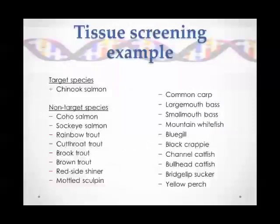We test assay specificity by ensuring that — using Chinook salmon as an example — every time we test a Chinook tissue sample, it produces a positive test result. While DNA from all other closely related species likely to be present in the system must fail to produce positive test results.